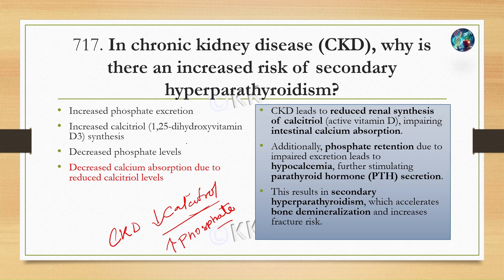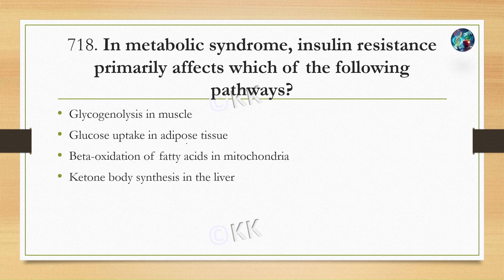Next question: in metabolic syndrome, insulin resistance primarily affects which pathway? Option A: glycolysis pathway. Option B: glucose uptake in adipose tissue. Option C: beta-oxidation of fatty acids in mitochondria. Option D: ketone body synthesis in the liver. The correct answer is Option B: glucose uptake in adipose tissue.